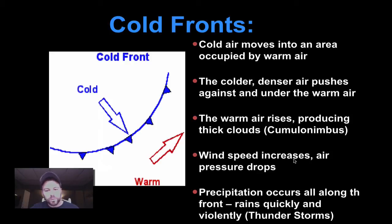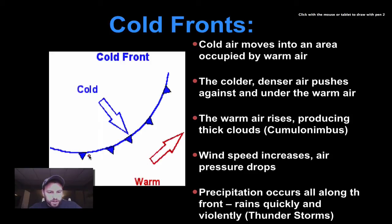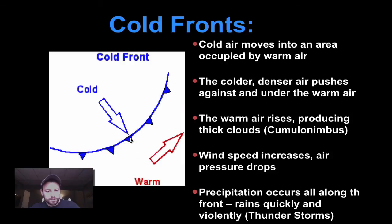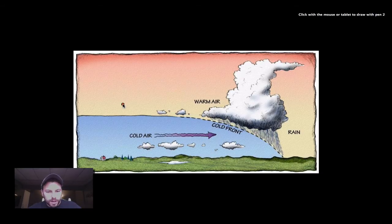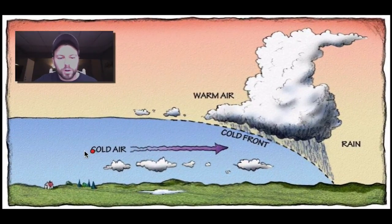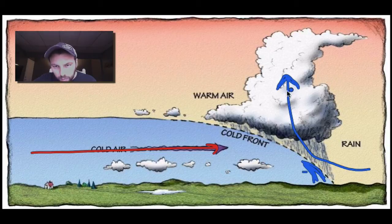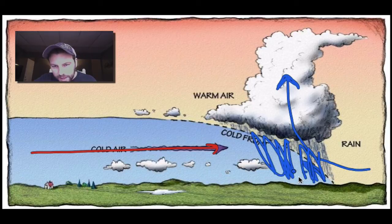The bigger the difference in pressure, the faster the wind speeds. We're also going to see the air pressure dropping as it forces that air up, and precipitation will occur right along the front. This diagram shows how cold air moves into an area, hugging along the ground, and forces the warm air up. You can see the nice clouds forming and rain occurring right at that front.